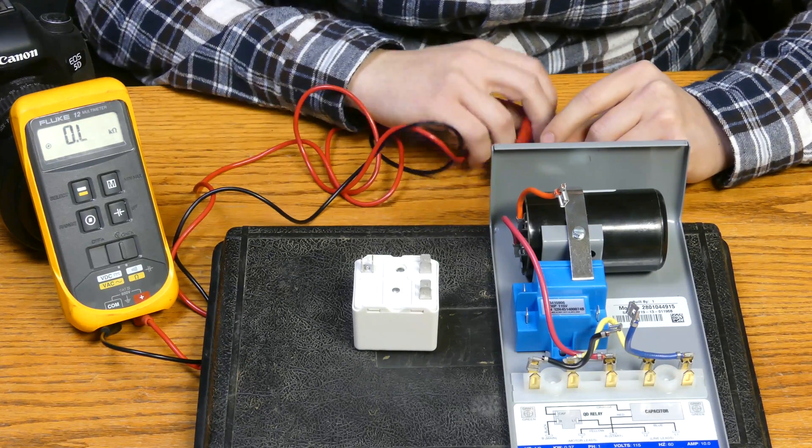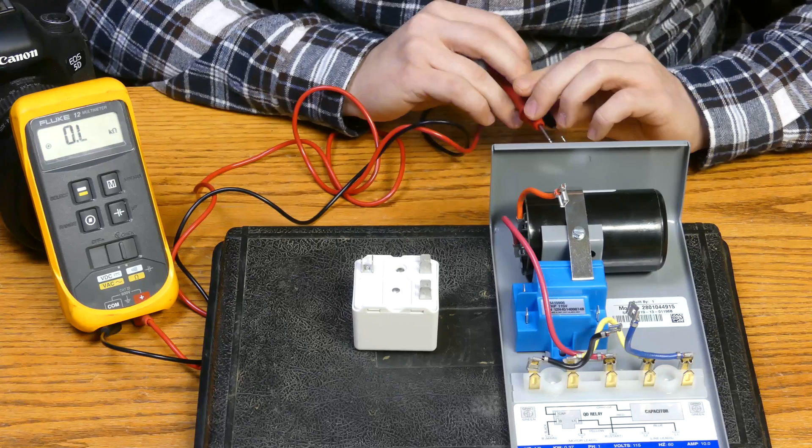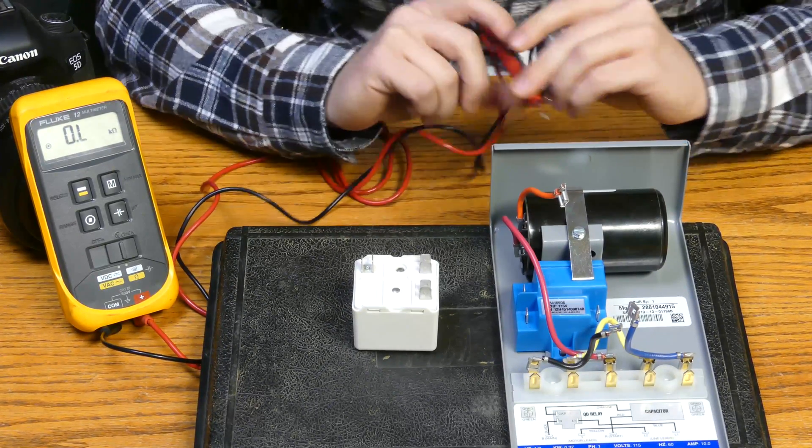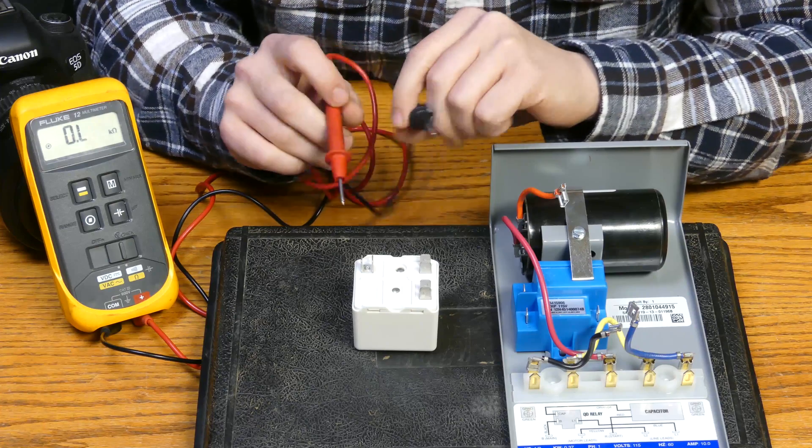So we've got our meter set to the ohms setting where we're going to be checking the resistance, and it is the R times 1000 if you're following along with your meter.